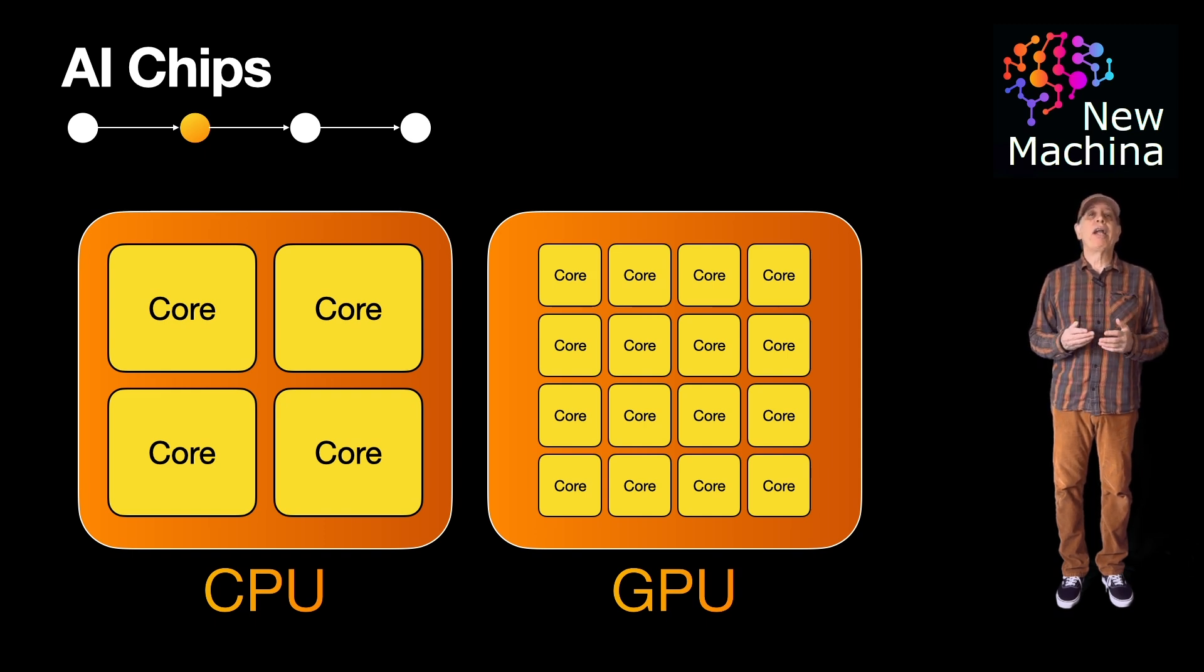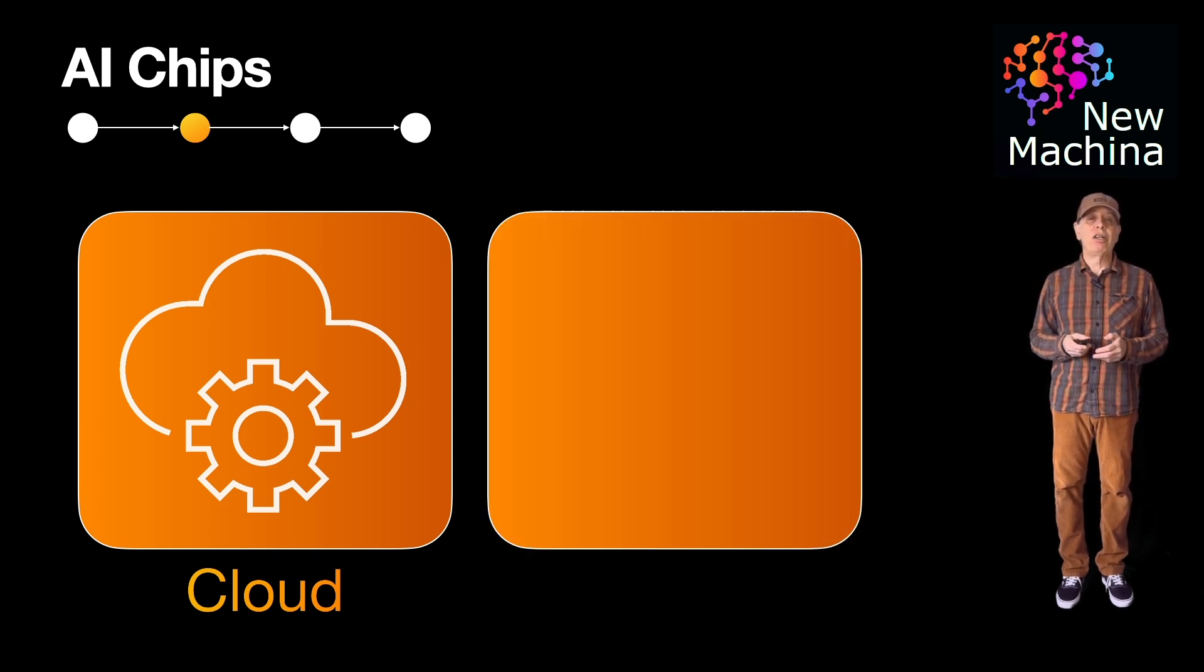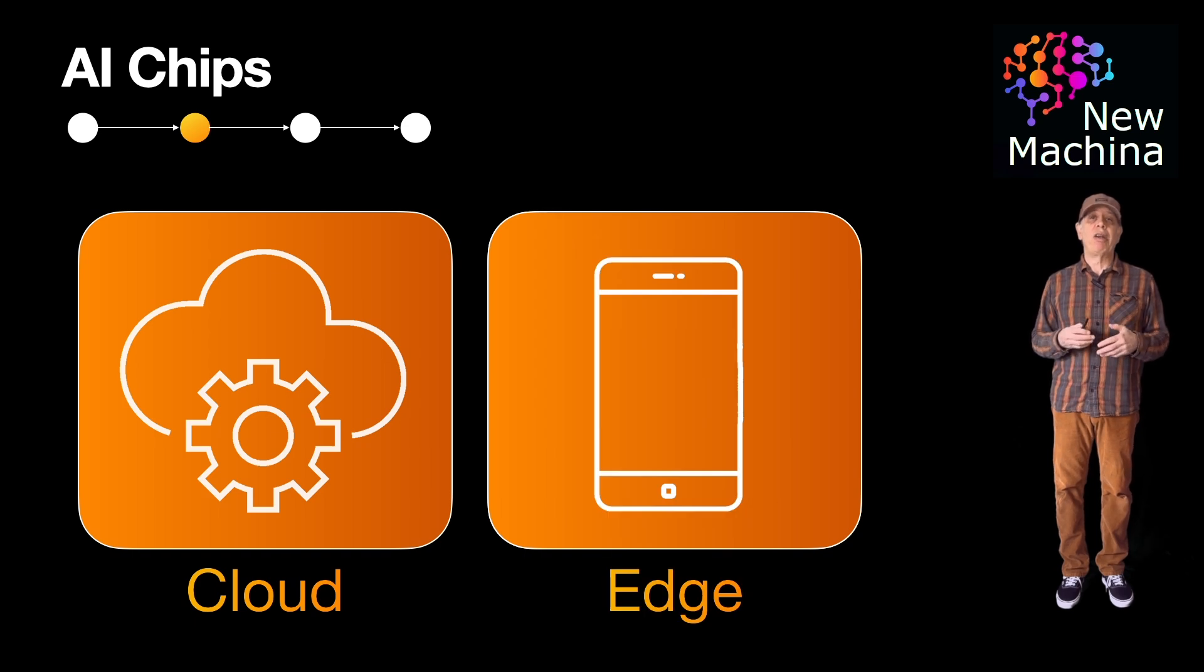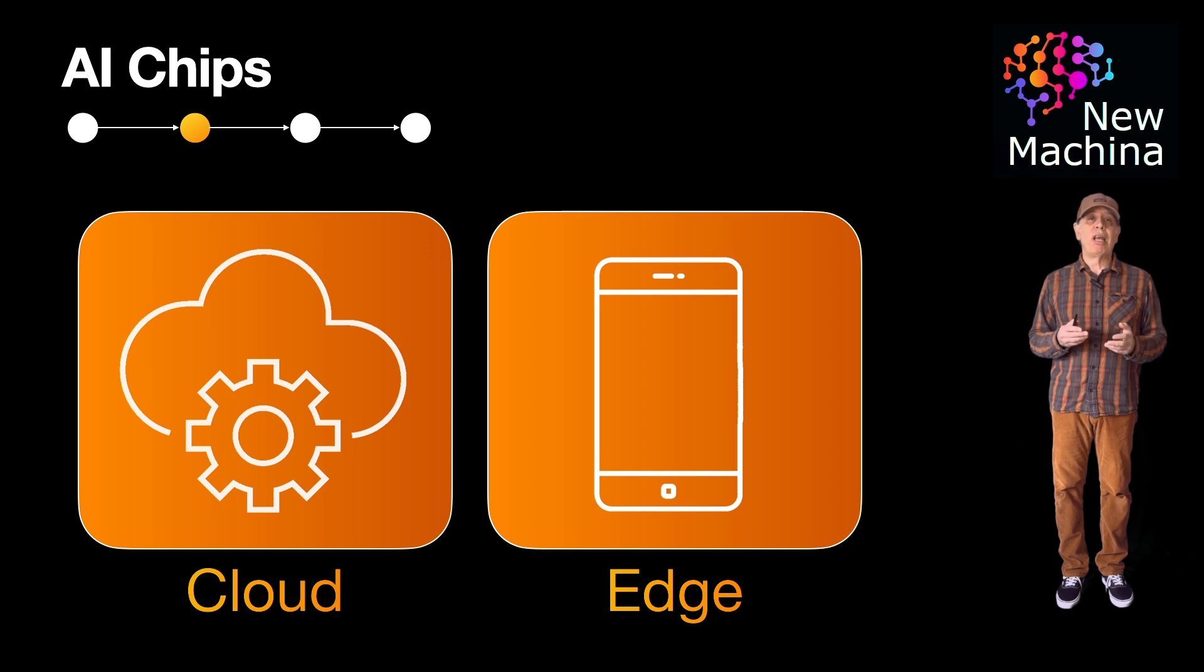So today, where can you find AI chips being used? Well, AI chips can be found powering cloud-based AI services running in massive data centers. Additionally, AI chips can be found in edge devices like smartphones, cameras, and even cars. For example, Apple's neural engine running on its AI chip handles AI tasks directly on your iPhone, while Tesla's Dojo chips are designed to train models for self-driving cars.